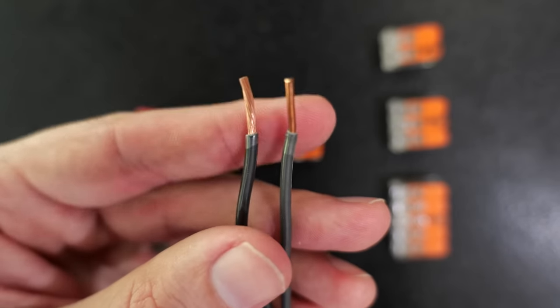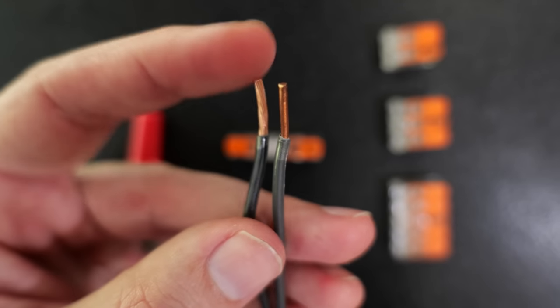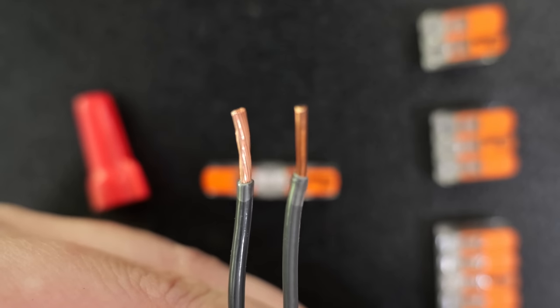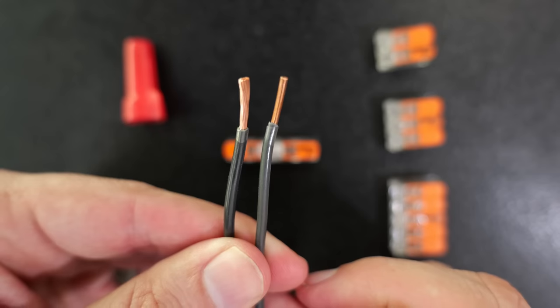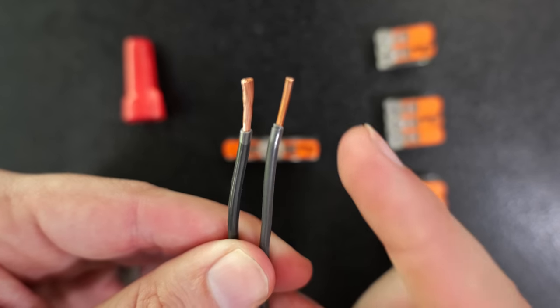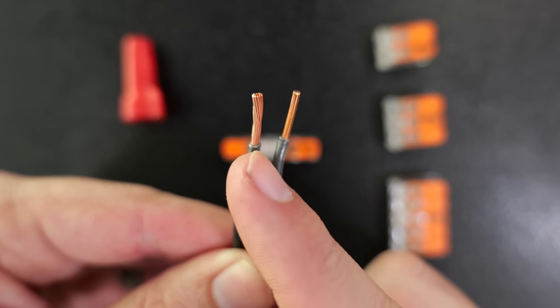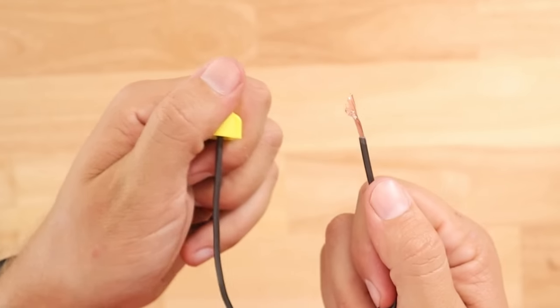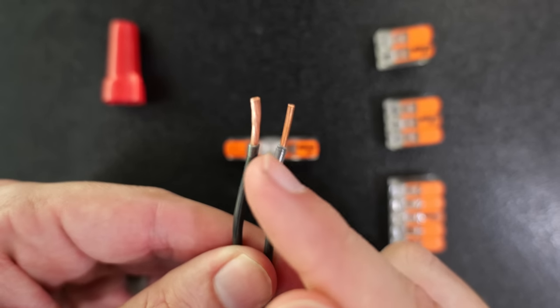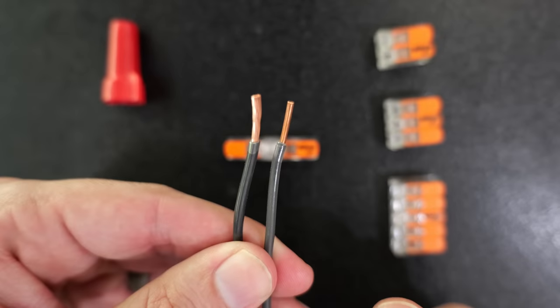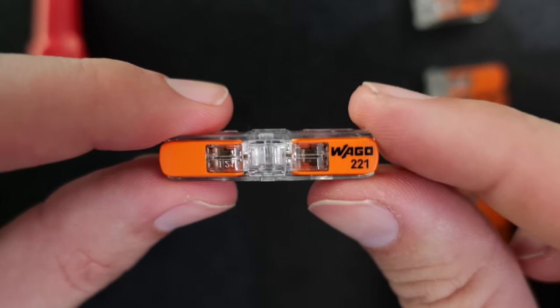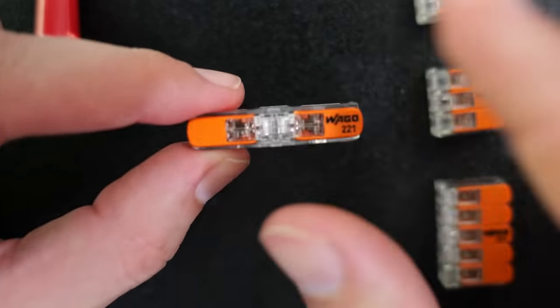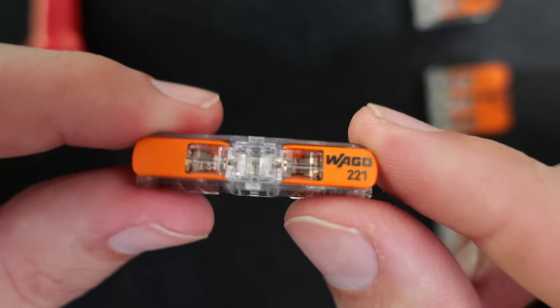Another area where the WAGOs can come in handy is when we need to make a connection between stranded to solid core. And regardless of skill level and experience, it could be argued that this is one of the most difficult connections to make. The reason for that is when you go to connect stranded to solid core, a lot of times the stranded might not bite as well underneath one of these wire nuts as the solid core will. So if these two wires are not connected together properly, it's more prone to fail.